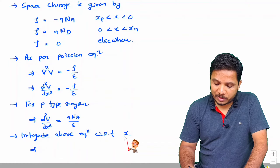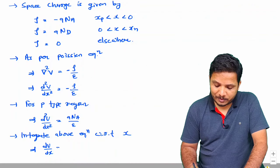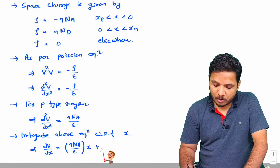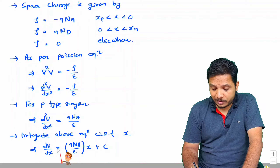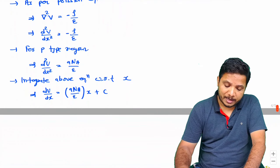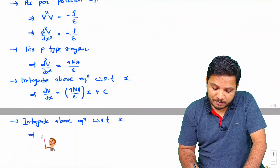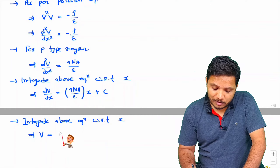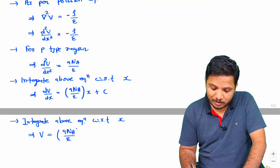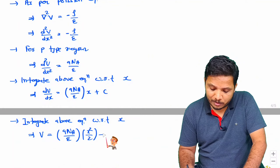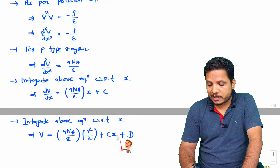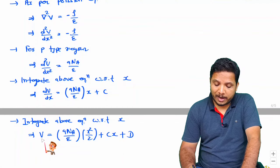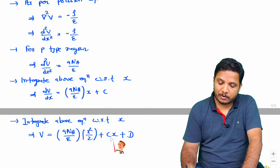Integrating with respect to X gives dV/dx = (Q·Na/ε)·X + C, where C is a constant. Integrating again with respect to X gives V = (Q·Na/ε)·(X²/2) + C·X + D, where D is another constant. To find the exact value of the voltage, I need to calculate constants C and D.